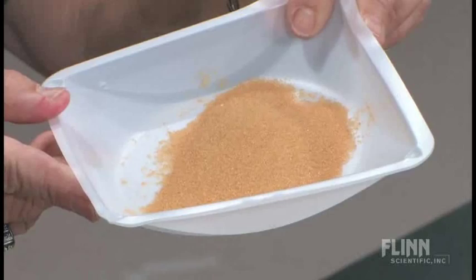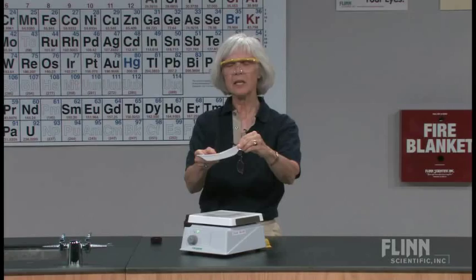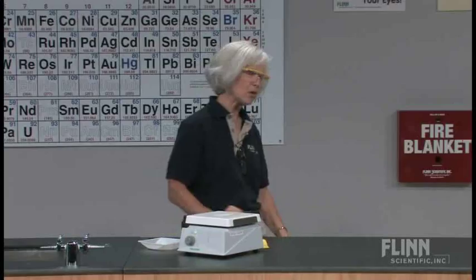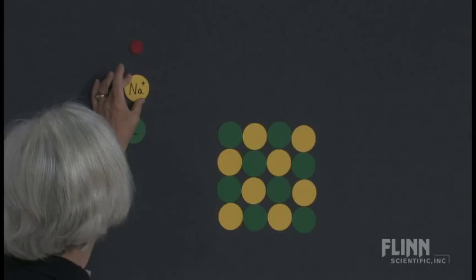What does that do to the salt to produce this color? We're going to go over to the board here and look at our crystal of sodium chloride and what happens when it's irradiated. I'm going to use the yellow circle to represent a sodium ion and the green circle to represent a chloride ion.